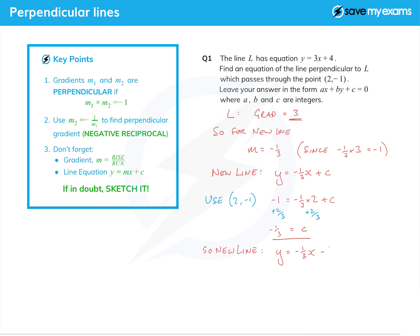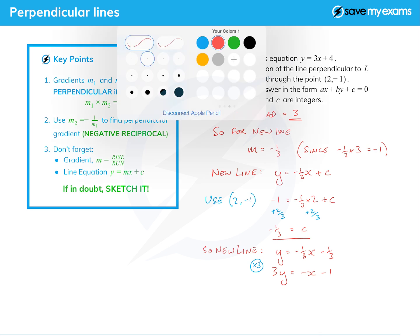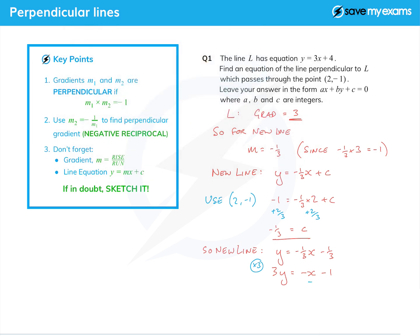In y equals mx plus c form that is minus a third x minus a third. But we're not asked to leave it like that, we need to put it in the form ax plus by plus c where a, b, and c are integers. We need to get rid of the fractions by multiplying everything by 3, which gives us 3y equals minus x minus 1.